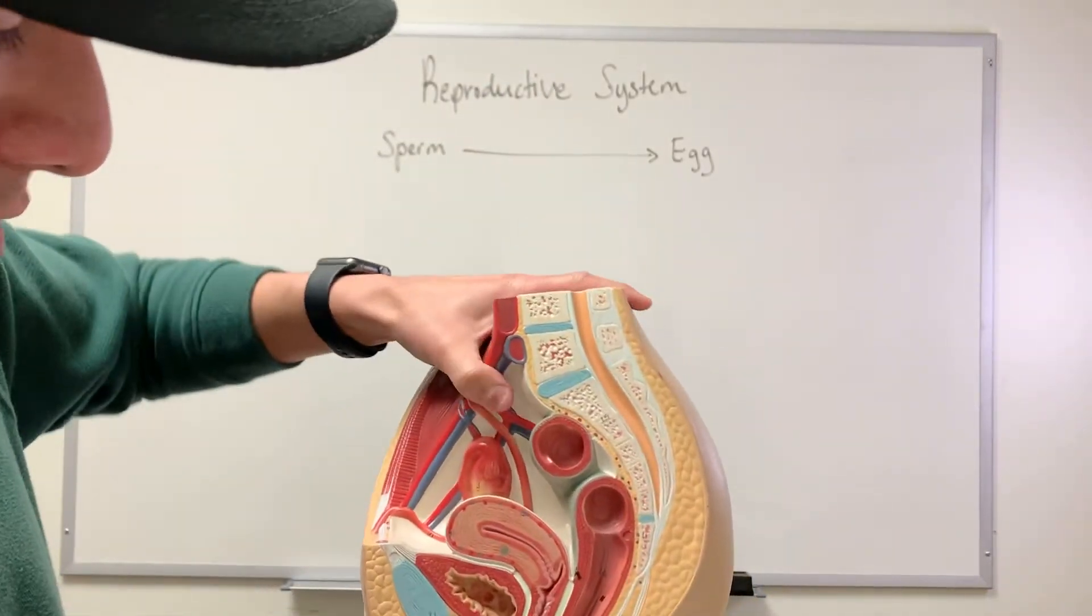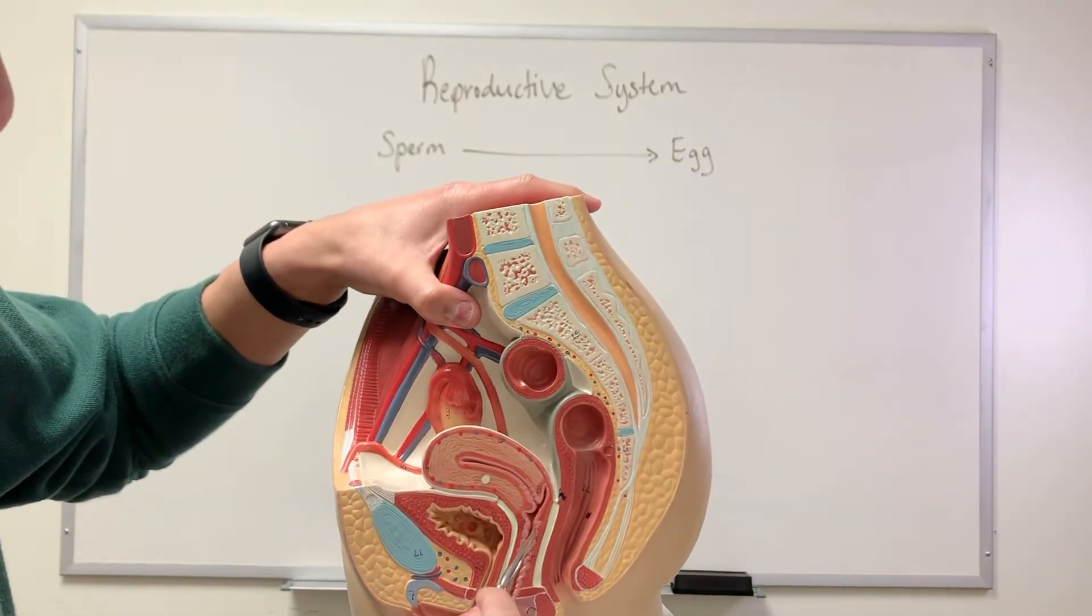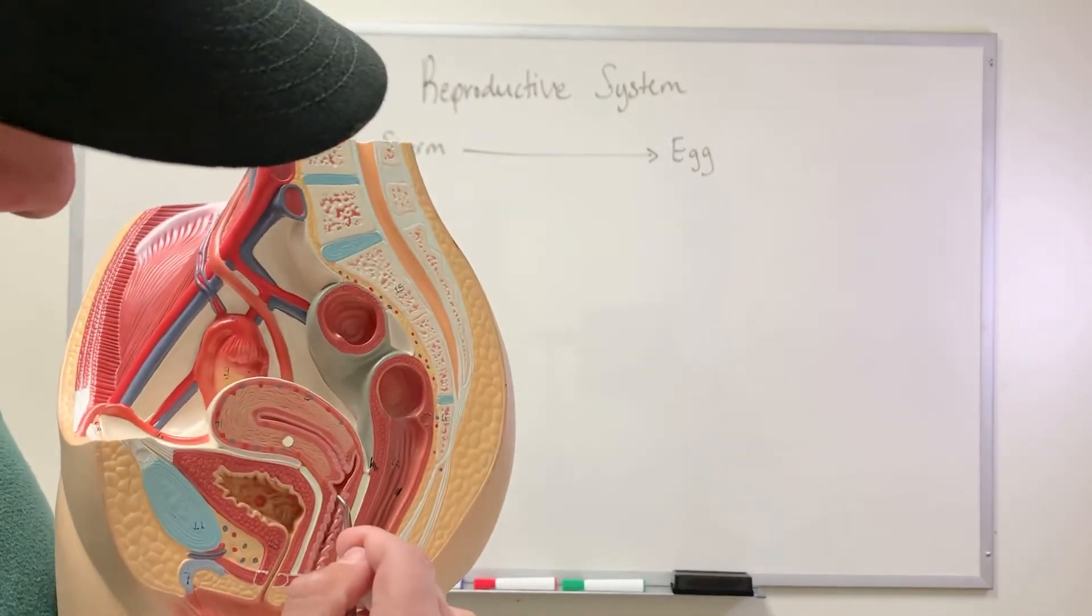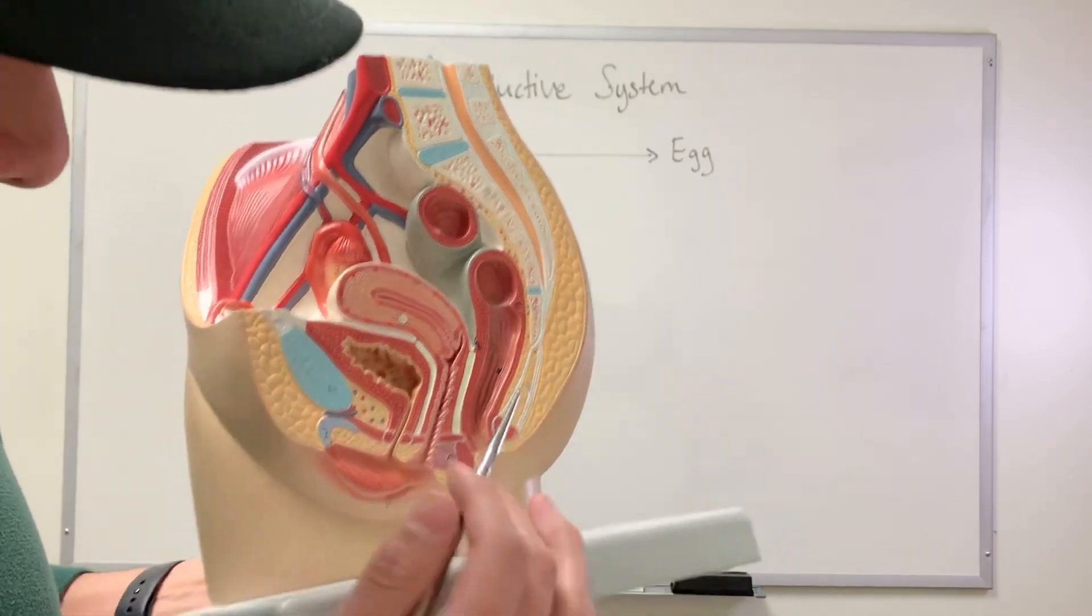So obviously, the penis will be inserted here into the vagina, and so it brings it closer towards this region. So this region is the cervix. But before we go further, let's work backwards a little bit.